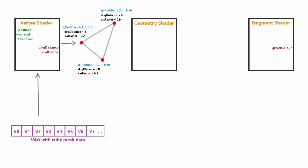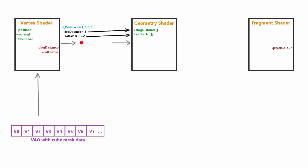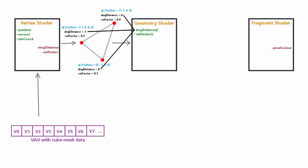The input to the geometry shader is the entire primitive it's executing for. Unlike the vertex shader which only has access to one vertex, the geometry shader has access to all of the vertices in the current primitive and any values assigned to them by the vertex shader. This means the geometry shader inputs must be arrays, because the input primitive can have more than one vertex. For points there's one element per array, for lines two, and for triangles three.